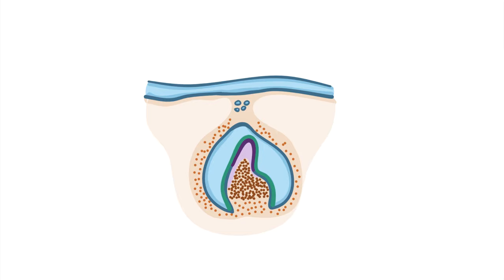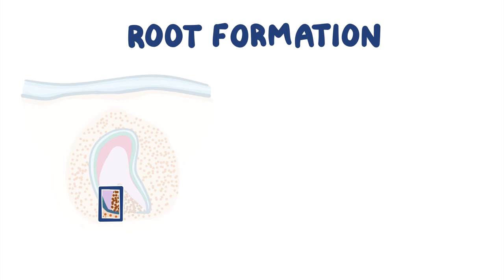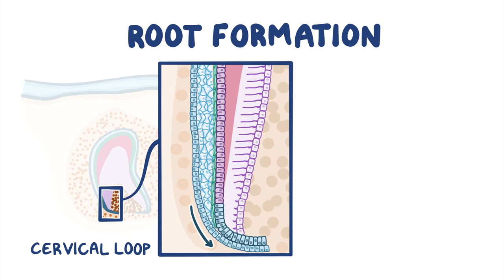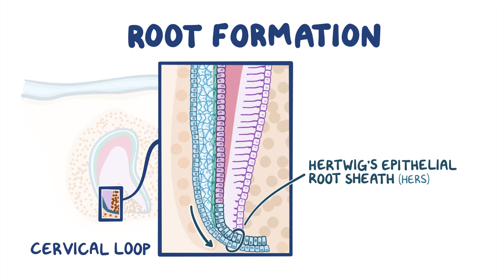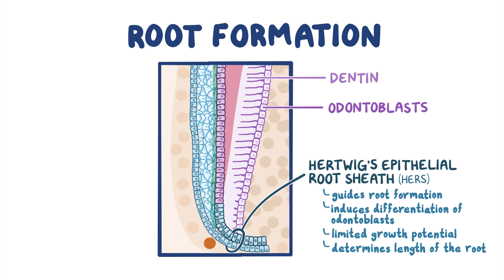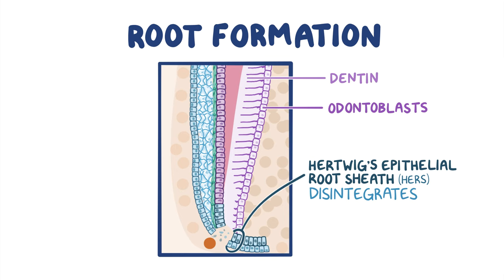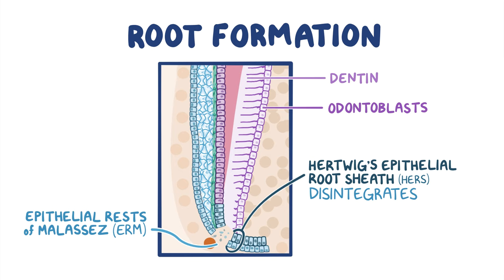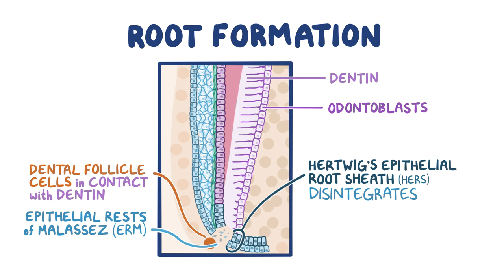Root formation starts after crown development is underway. The cervical loop cells begin to proliferate downwards to form a two-layered structure known as Hertwig's epithelial root sheath, or HERS. HERS proliferates and migrates downward, guiding root formation and inducing the differentiation of odontoblasts that form root dentin. HERS has a limited growth potential, which determines the length of the root. The disintegration of HERS results in the formation of an epithelial network called epithelial rests of Malassez, or ERM, allowing cells of the dental follicle to contact root dentin and differentiate into cementoblasts that deposit cementum on the root surface.